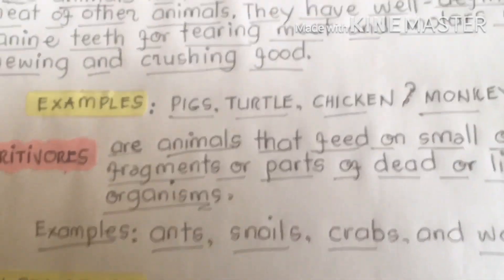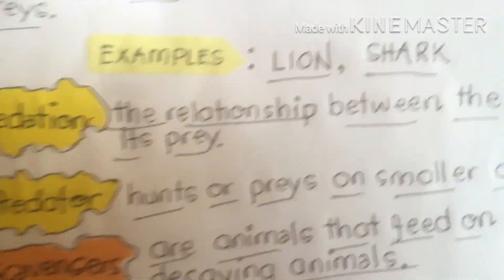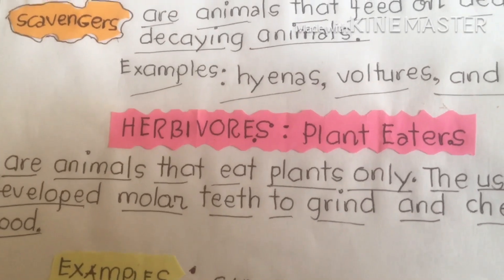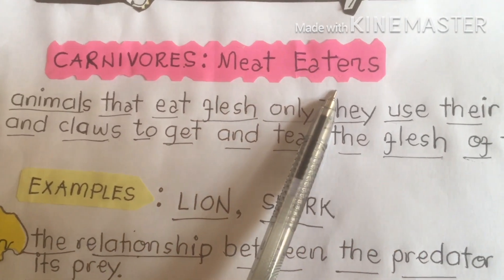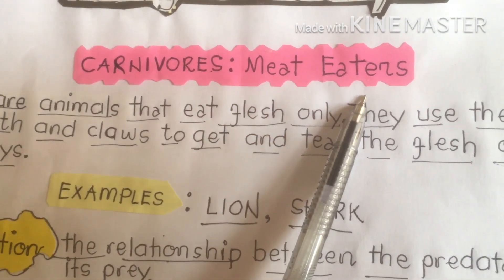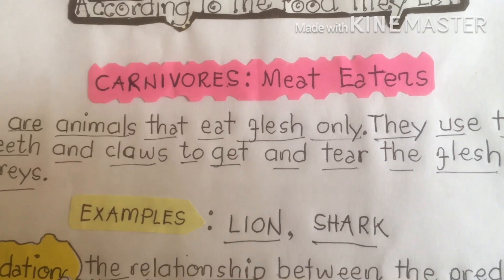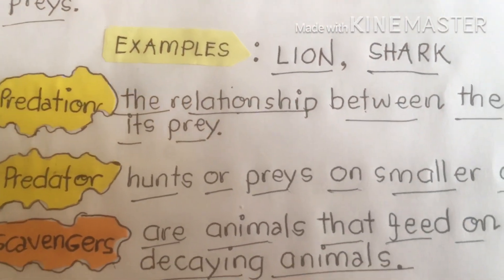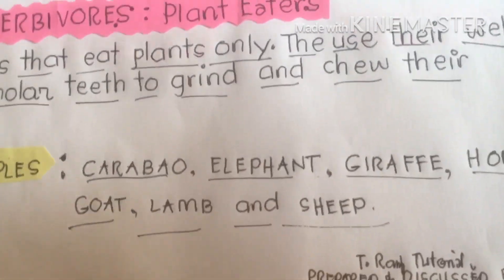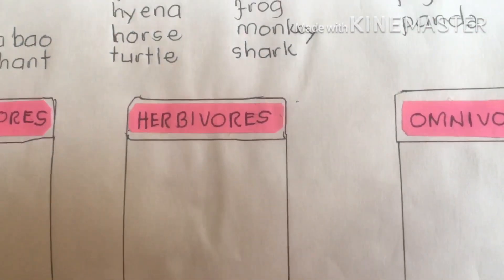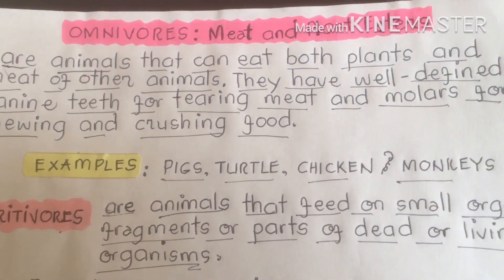So to recap: the three classifications of animals according to the food they eat are omnivores — meat and plant eaters; herbivores — plant eaters; and carnivores — meat eaters. Remember also predation, predators, scavengers, and detritivores. Now we are going to proceed to our exercises to see if you can follow our discussion today.